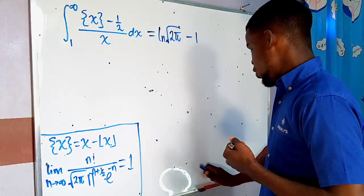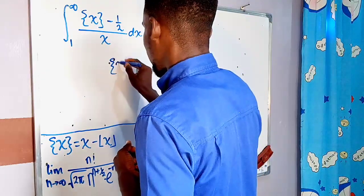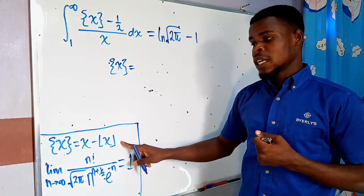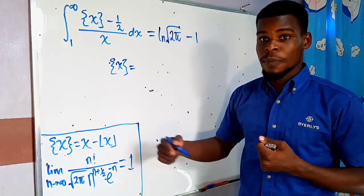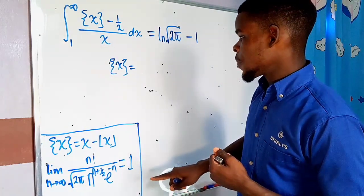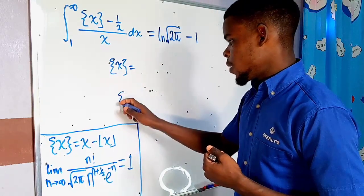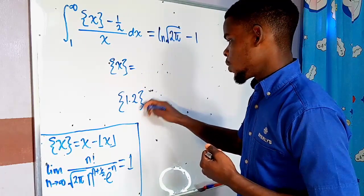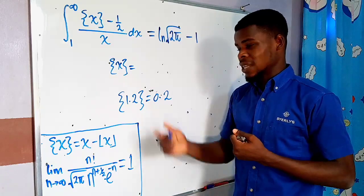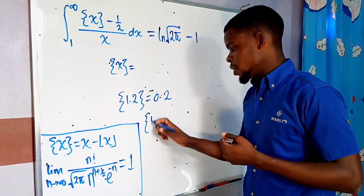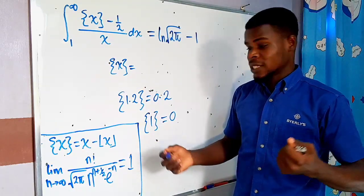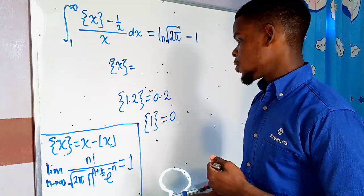We need to understand what the fractional part of x means. These two tools are going to help us — the first one to start and the second one to finish. The fractional part of an input: for example, the fractional part of 1.2 is just 0.2 — the decimal part. And the fractional part of a whole number is zero, since it has no decimal part.